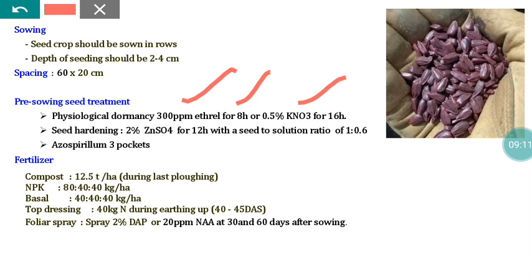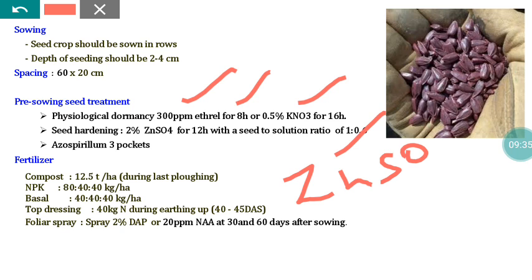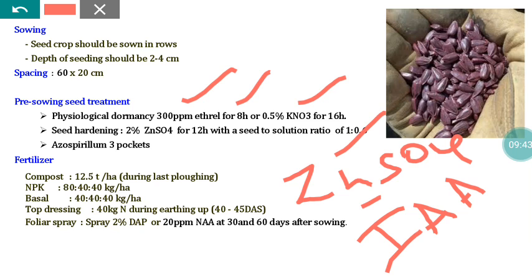Apart from dormancy treatment, seed hardening with 2% zinc sulfate is recommended — seeds should be soaked for 12 hours. Zinc sulfate is very important for sunflower because zinc is responsible for the production of indole acetic acid (IAA). IAA is needed for maintenance of apical dominance, meaning the main stem alone grows vertically without branching. If only one main stem is present, only one earhead of sufficient size will be formed.